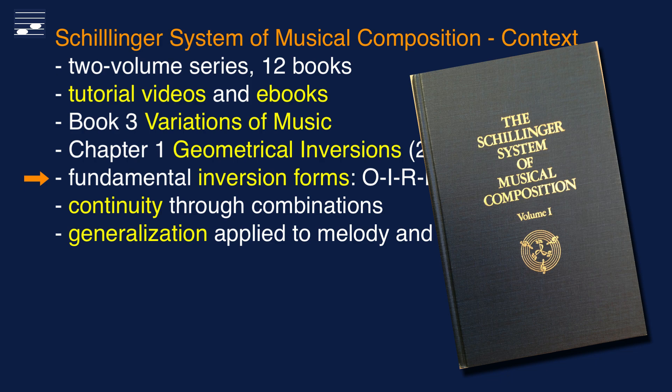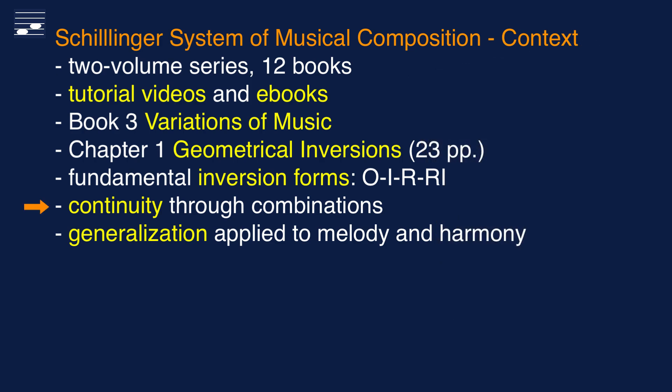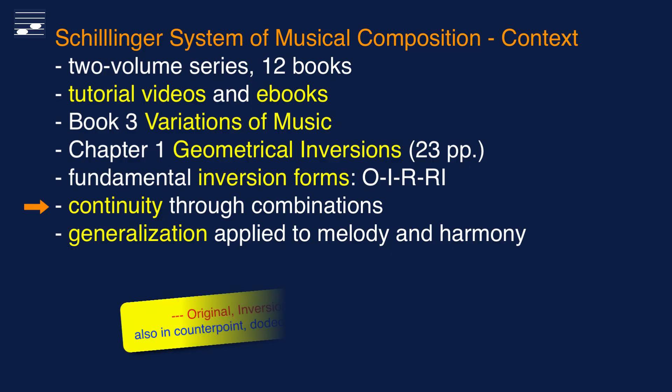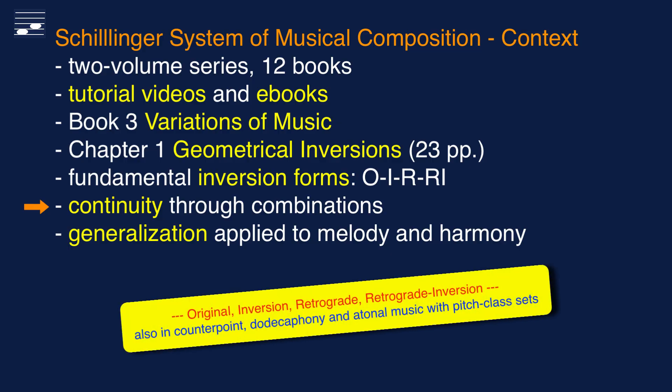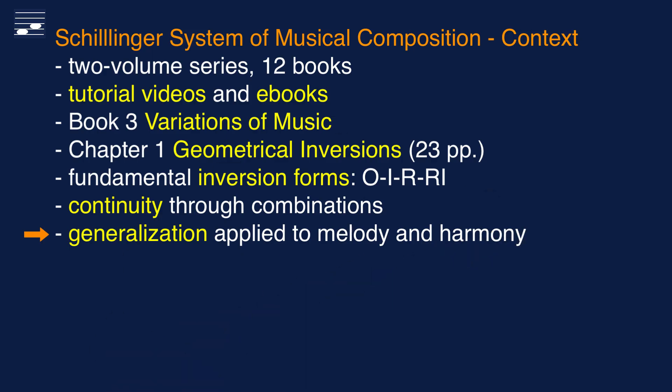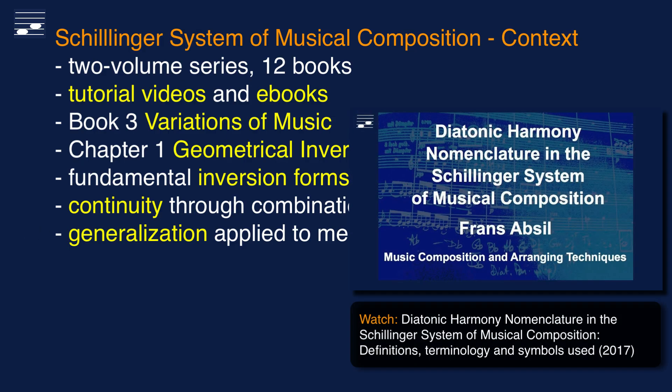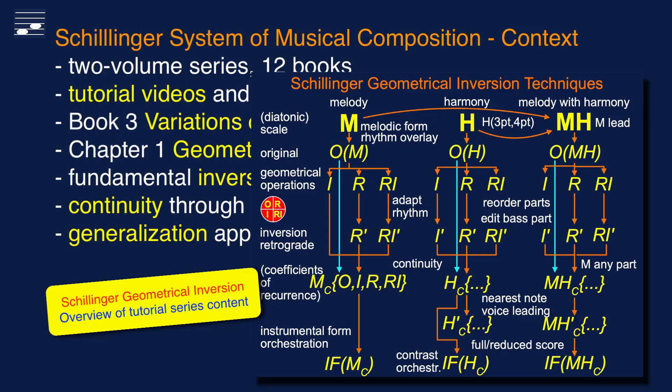There are the four inversion forms, which may then be combined into longer continuities. You'll find these four forms also in books on counterpoint and atonal music with pitch-class sets. Schillinger frequently applies a generalization approach and therefore extends the four inversion forms to harmony and the combination with melody. The twenty-three pages long chapter is concise, and I decided to turn it into this three-episode tutorial series with fresh examples. As a starter to the Schillinger system, you may want to watch this video which introduces some of his concepts and terminology. Throughout the series I will make frequent reference to this overview diagram to help you navigate the subject.